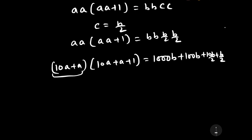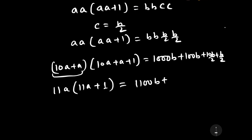Adding these two numbers on the left side: 11a into 11a plus 1 is equal to 1100b plus 11b by 2.